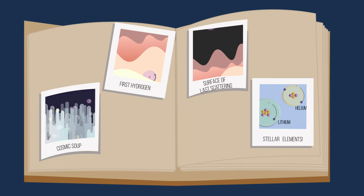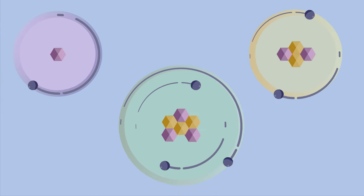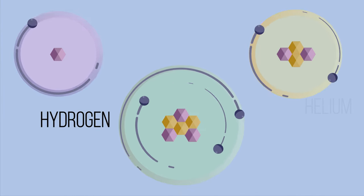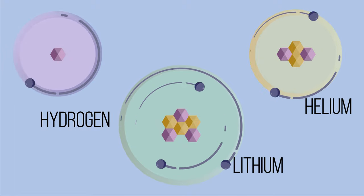Photons can now move much longer distances and carry the information about this time further. Electrons are free to orbit baryonic nuclei, forming the basic blocks of all life.